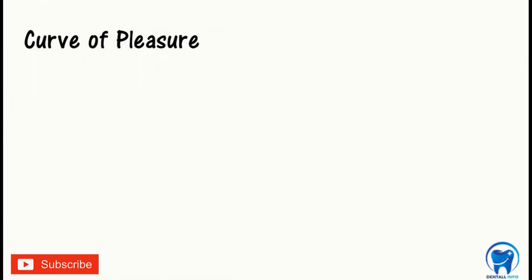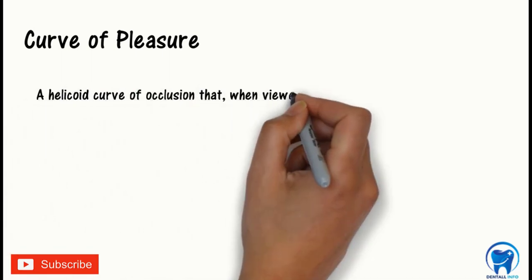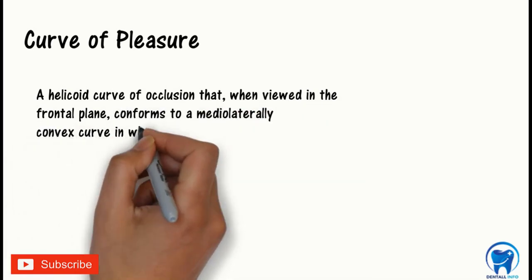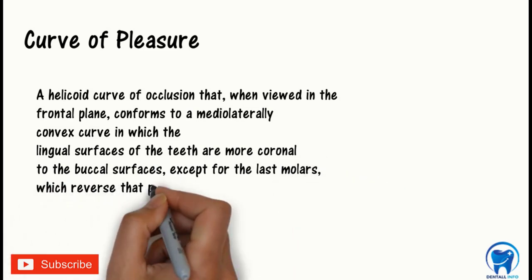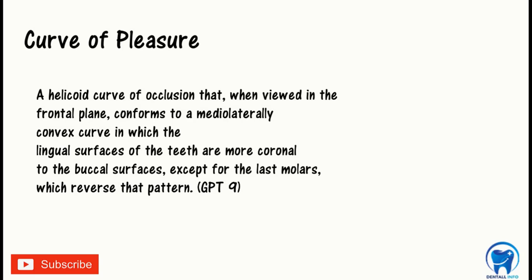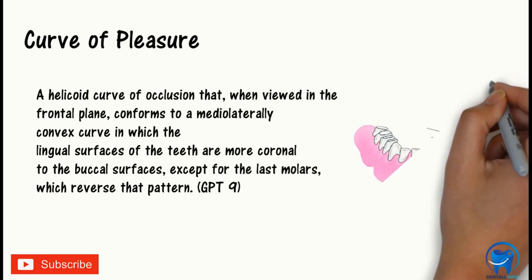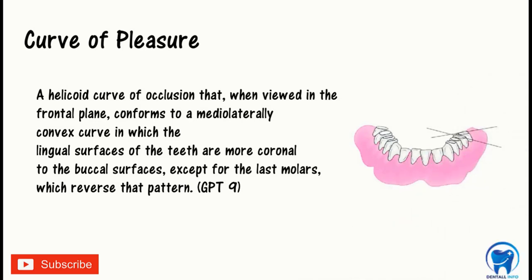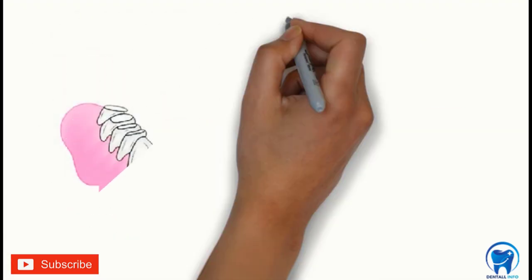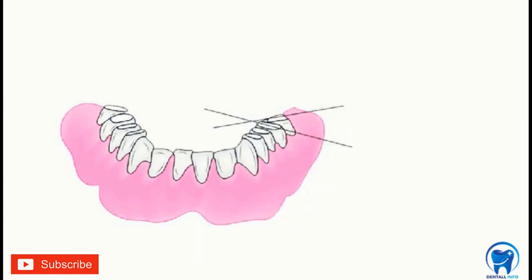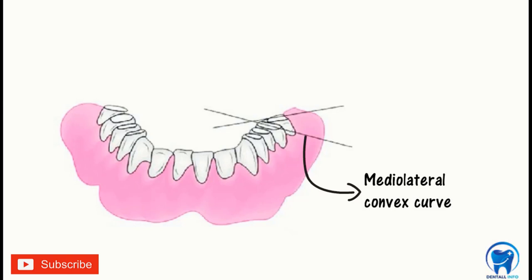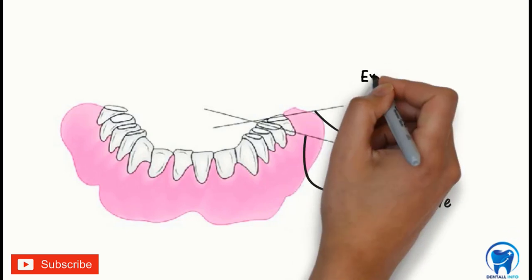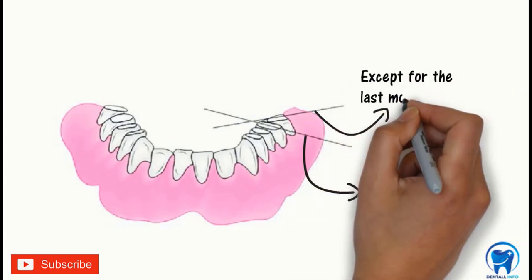Coming to the next curve which is the curve of Pleasure. It is defined as a helicoid curve of occlusion that, when viewed in the frontal plane, conforms to a mediolaterally convex curve in which the lingual surfaces of the teeth are more coronal to the buccal surfaces, except for the last molars which reverse that pattern, according to GPT-9. Here we can see that the lingual surfaces of the teeth are more coronal to the buccal surfaces, which forms the mediolateral convex curve except in the last molars. This is what forms the curve of Pleasure.